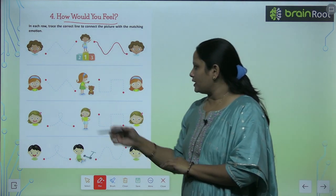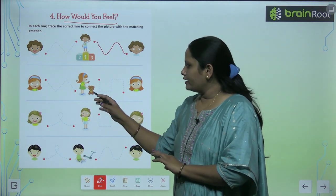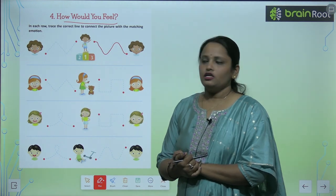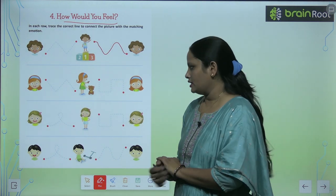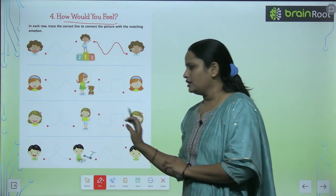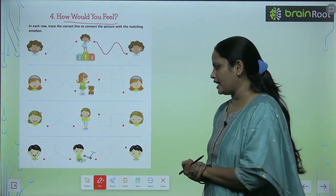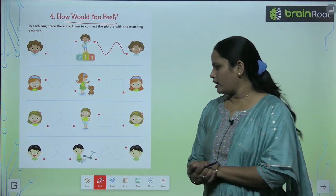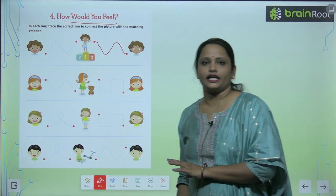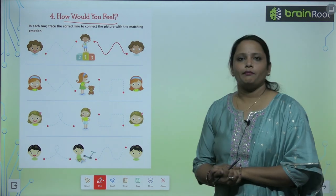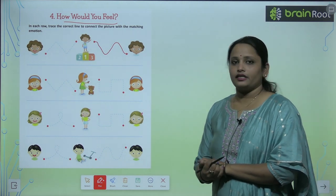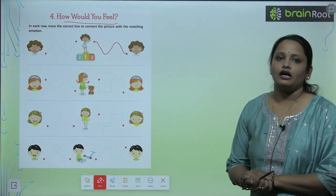Similarly, here's a girl. You can see she's playing with a teddy bear. Which face is matching hers? You have to draw the line. You can see his face is matching her face. So children, I think you can do this. I have understood this.